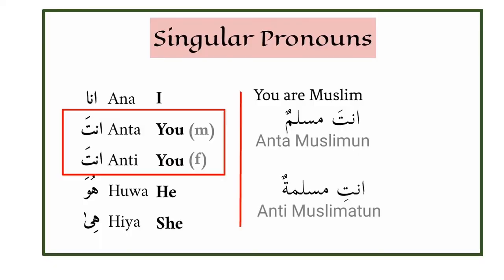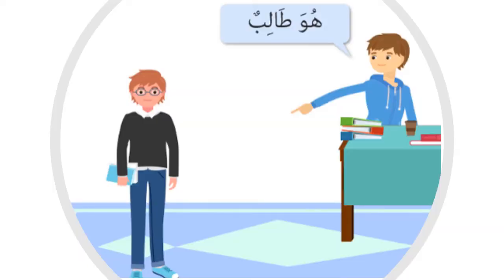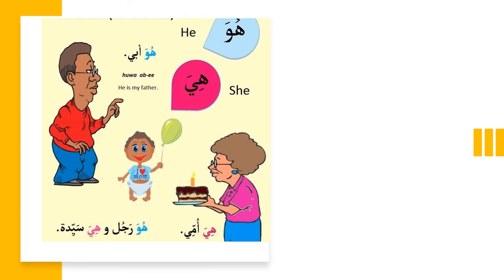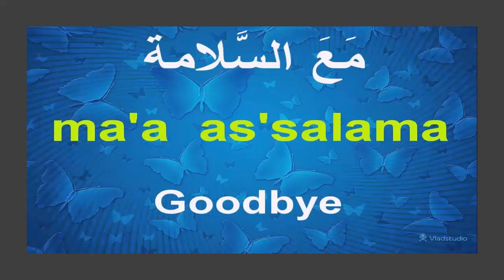These are some more examples of Anta and Antti. Next, Hua — Hua Talib, which means he is a student. Hia — Hia Sara, which means she is Sara. More examples: Hua Abi, which means he is my father. Hia Umi, which means she is my mother. I hope you understand the personal pronouns.